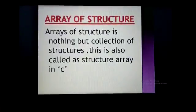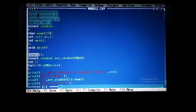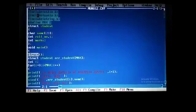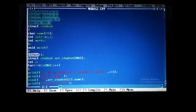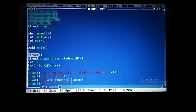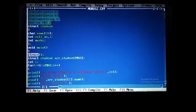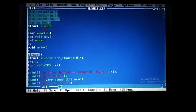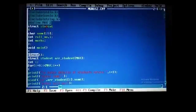We understand array of structure with the help of an example. First of all, we write the header file which we need. In this program, we define max size 2. Then, we define a structure name. Here, student is the structure name.